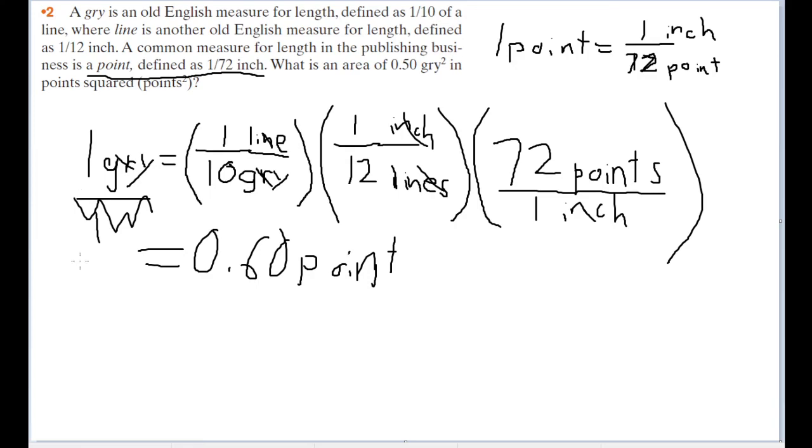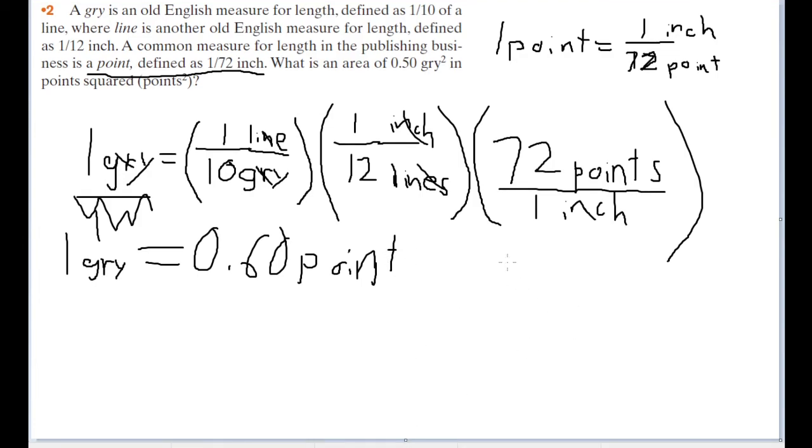So that is our conversion from one gris to point. Still not exactly what we want to find though, since we're working with gris squared and points squared.